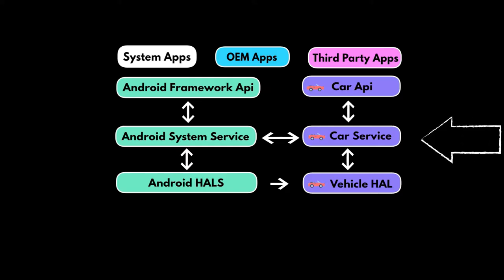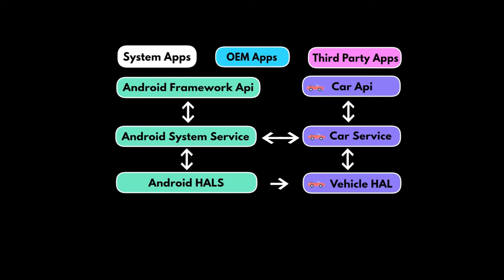The car service communicates with the Android system services for its functioning. The car service is started by the system server when the device boots up. The car service is responsible for talking with the vehicle HAL over the binder IPC. The vehicle HAL communicates with the automotive ECUs — that's not shown in this diagram but we will look at it shortly. Now let's look deeper into the right side of this diagram, the automotive stack.